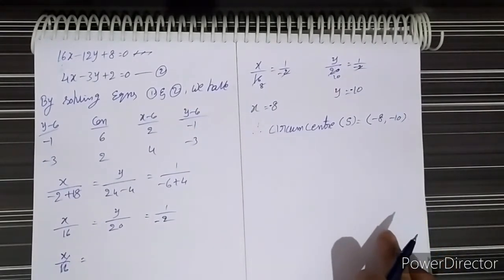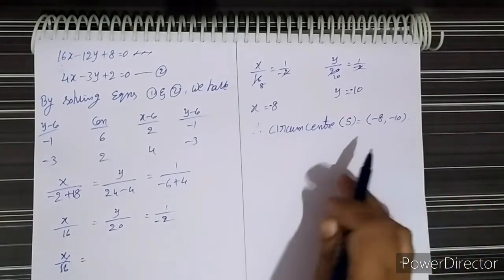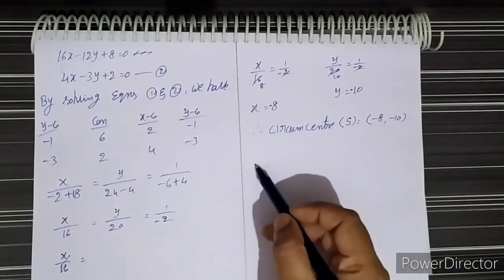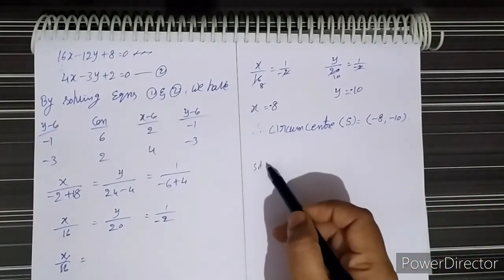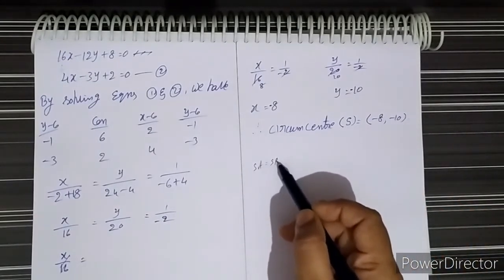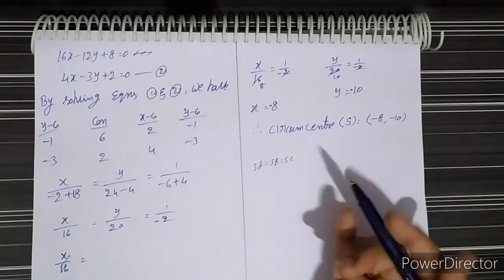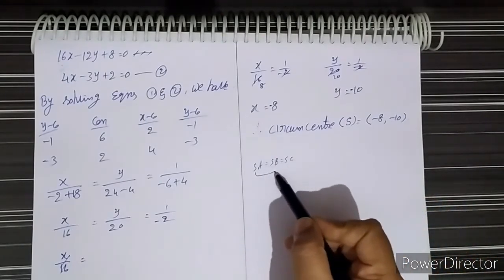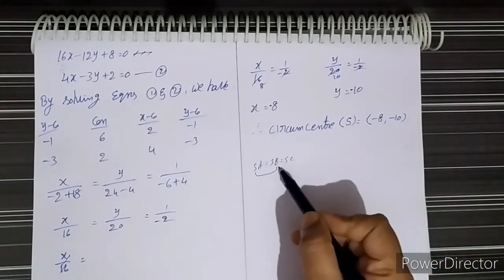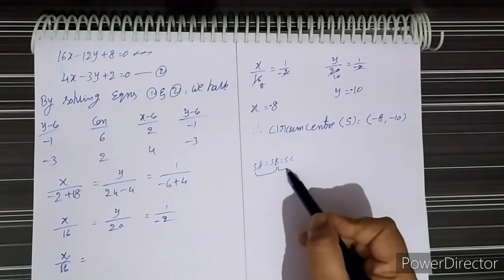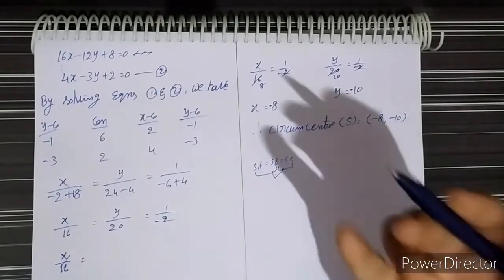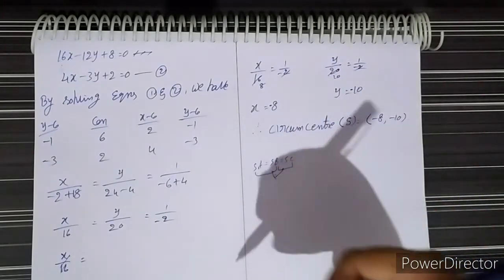For finding the circumcenter we use SA equal to SB equal to SC. We equate SA equal to SB, and SB equal to SC. By solving these two equations we can get the circumcenter.